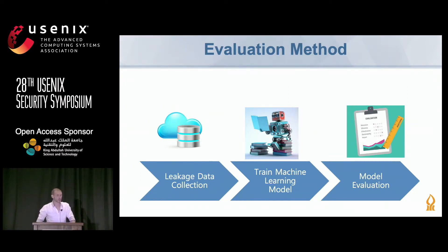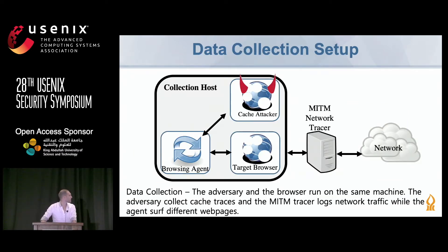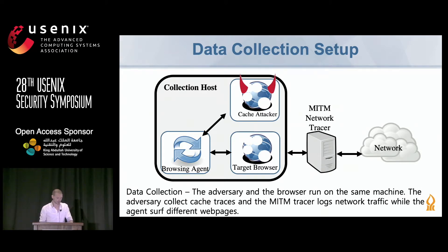Our evaluation involved collecting large amounts of data over six months, from different websites in different settings across Israel and Australia. We trained deep learning models on these traces and evaluated accuracy on different test sets. Our collection setup used a browsing agent that visited websites, collecting a cache attack trace for every visit. To compare with prior work, we also ran a man-in-the-middle network tracer so cache traces and network traces are aligned.